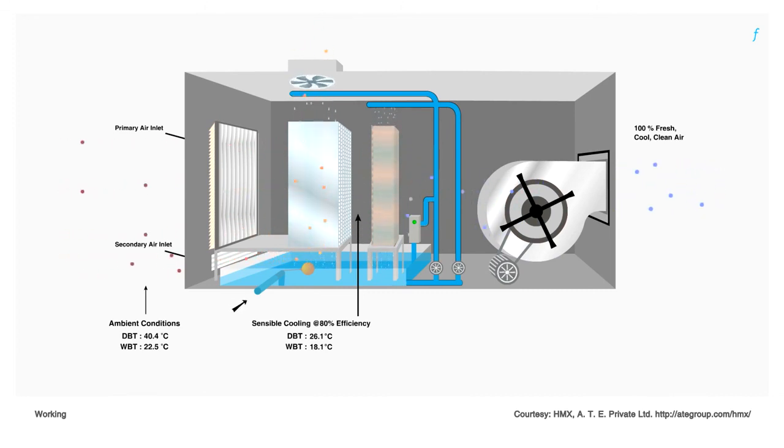Air coming out from the first stage then passes through the direct stage heat exchanger, the cellulose pad, where it comes in contact with a stream of water to further lose heat while gaining some humidity. The air at the outlet of this heat exchanger is drawn in by the blower and delivered via ducts to the spaces requiring cooling.